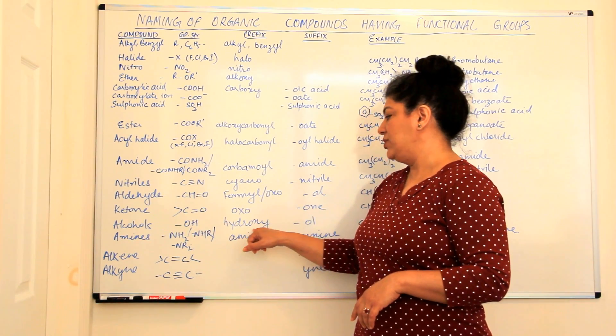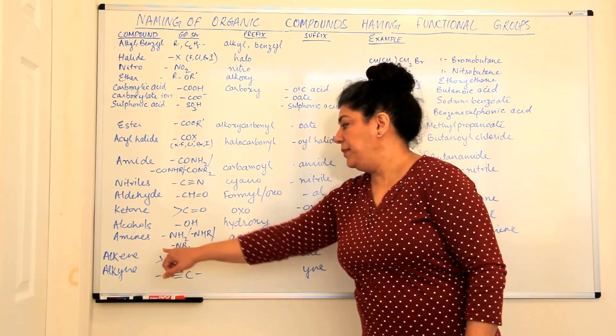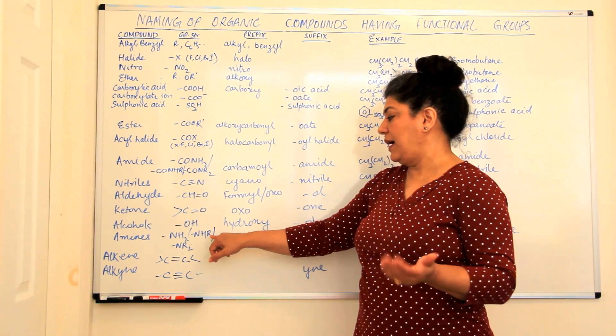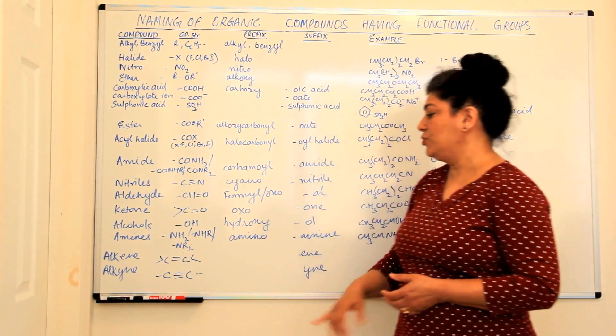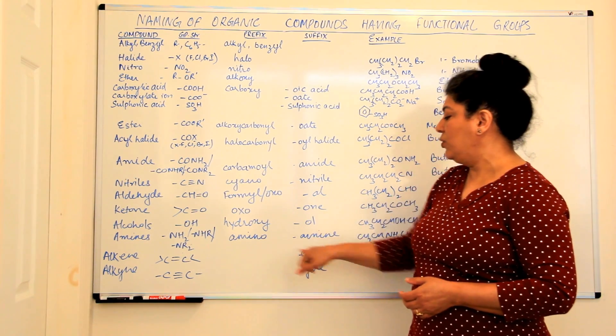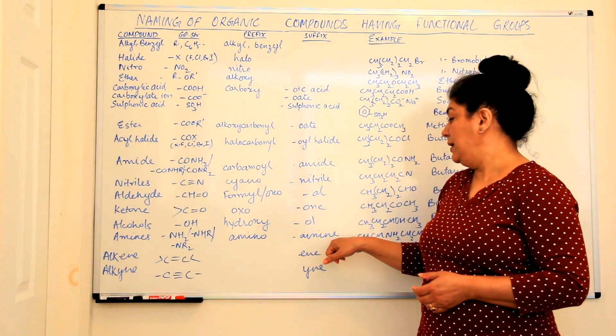Alcohols, OH, hydroxy or ol. Amines would be NH2 and the hydrogens can be substituted with alkyl groups. So they can be NHR or NR2. As a prefix, they would be amino and as a suffix, they would be amines.